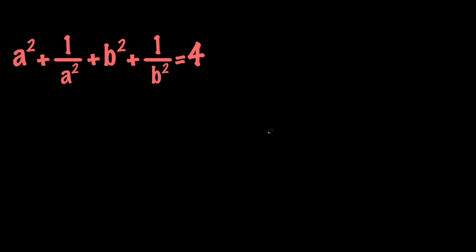Hello there, welcome to my channel. Today we're going to be solving a quick and easy equation with two variables, where we have a squared plus 1 over a squared plus b squared plus 1 over b squared equals 4, and we're supposed to solve for a and b. So let's go ahead and do that.